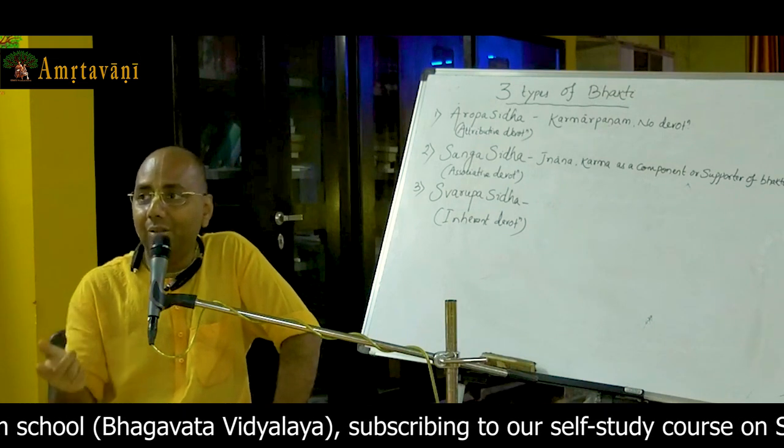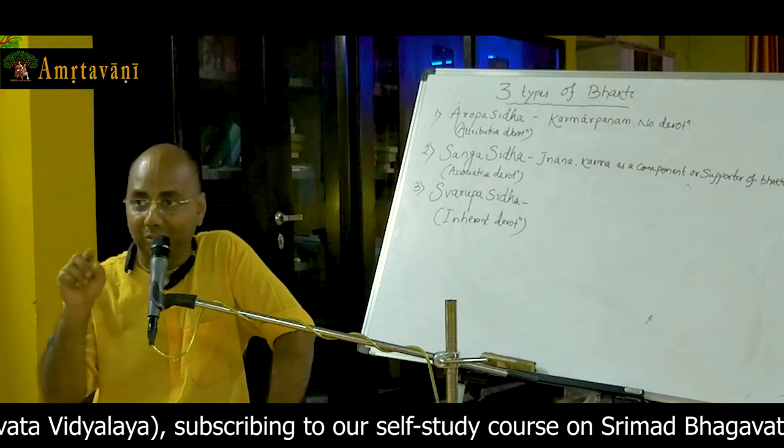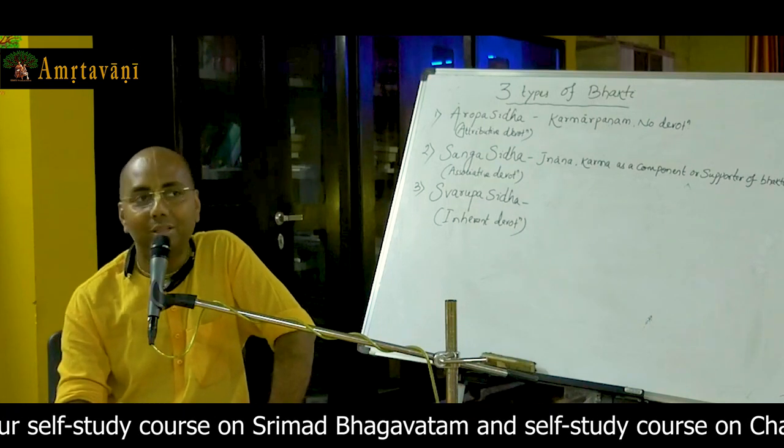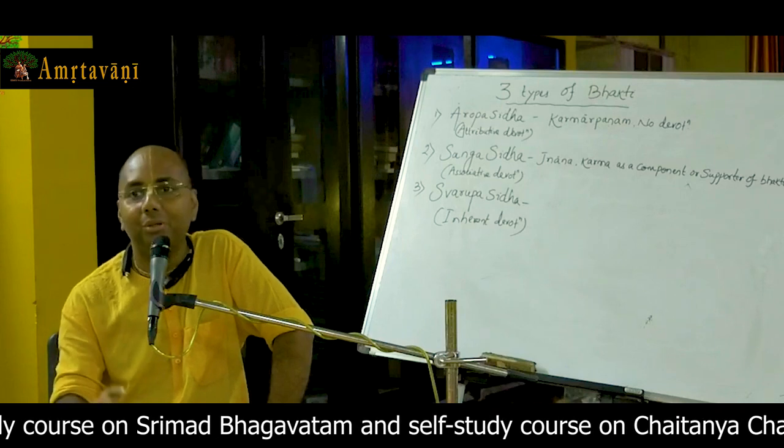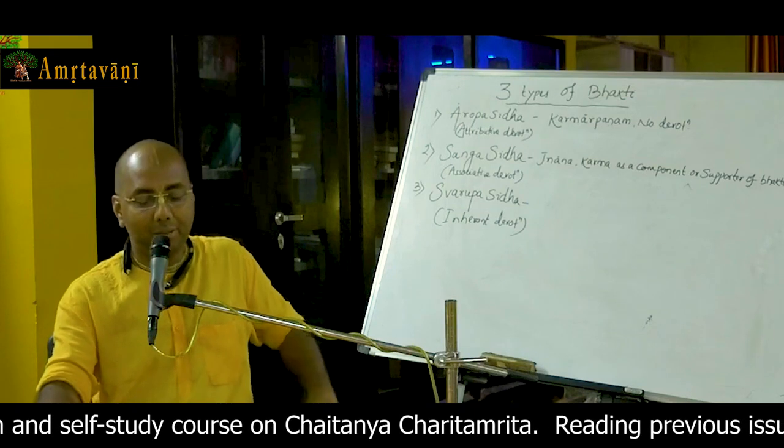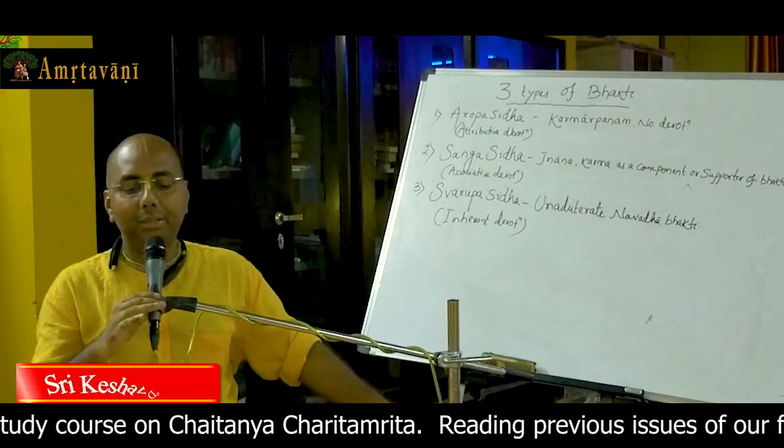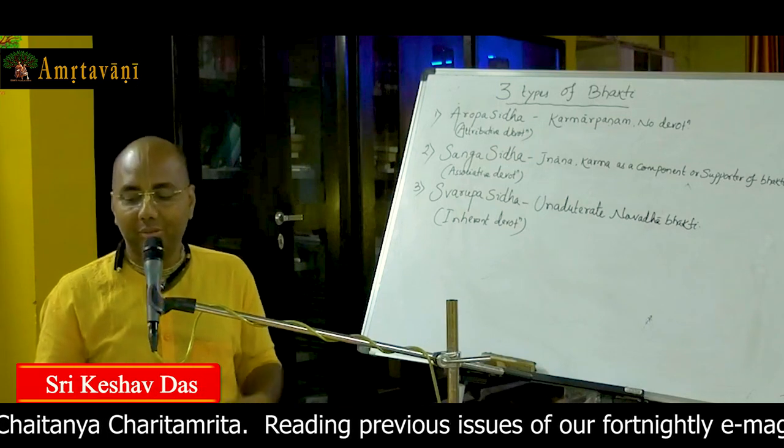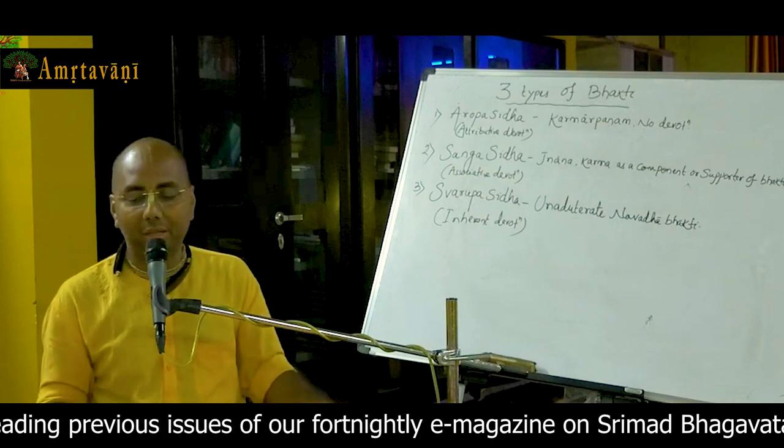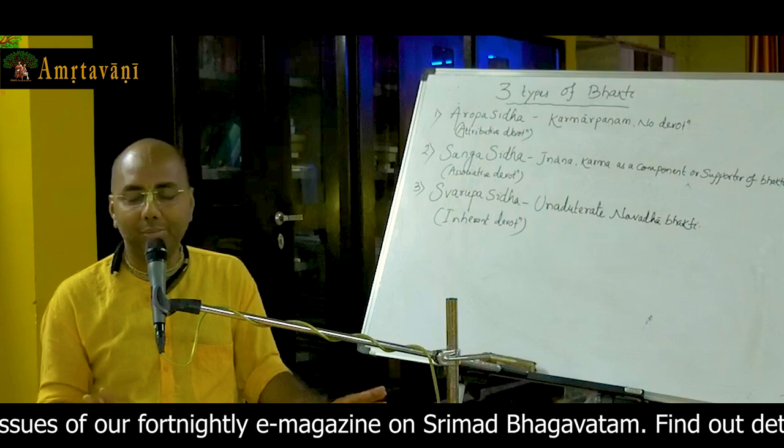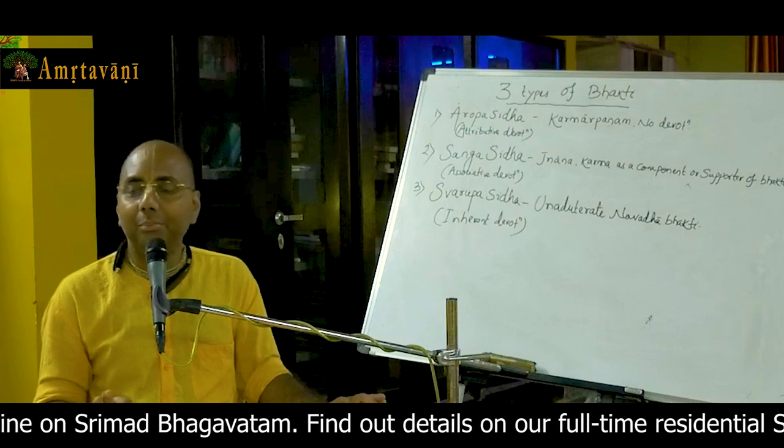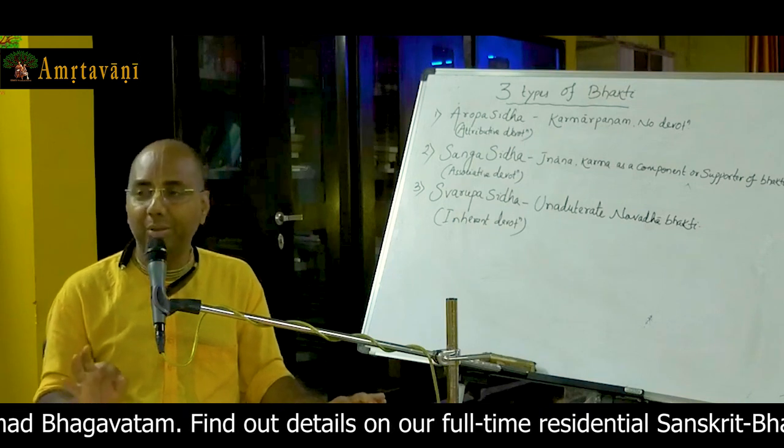He could have run a company outside world, must have been a manager in some company. Now he is managing temple. Karma is used like this. Jnana, karma or vairagya, we are using in the service of the Lord to get the ultimate goal. That is Krishna prema or ultimate goal, Krishna bhakti.